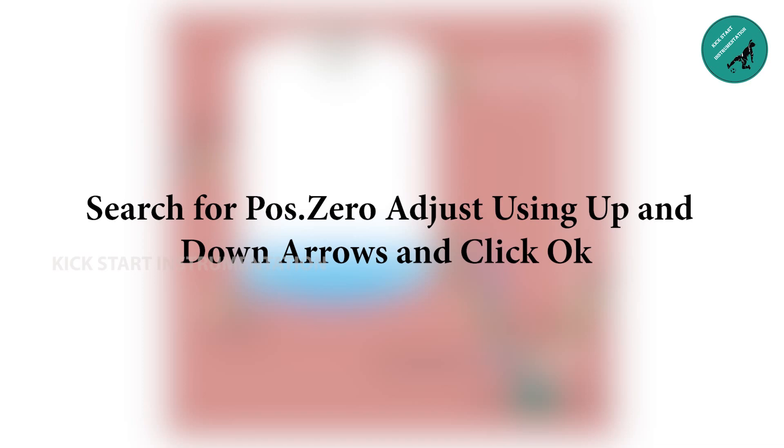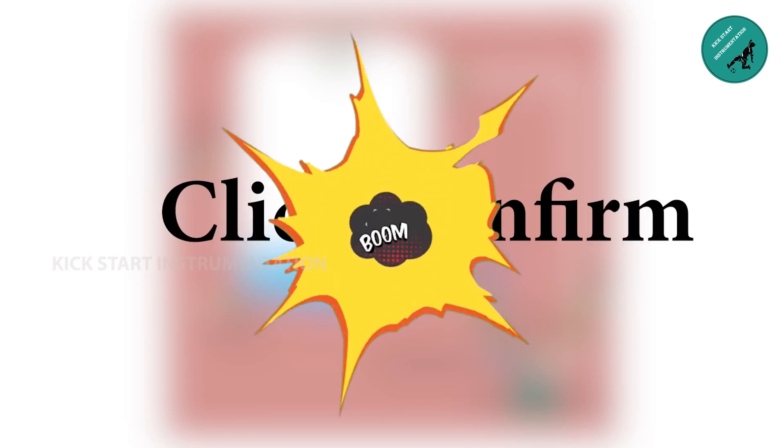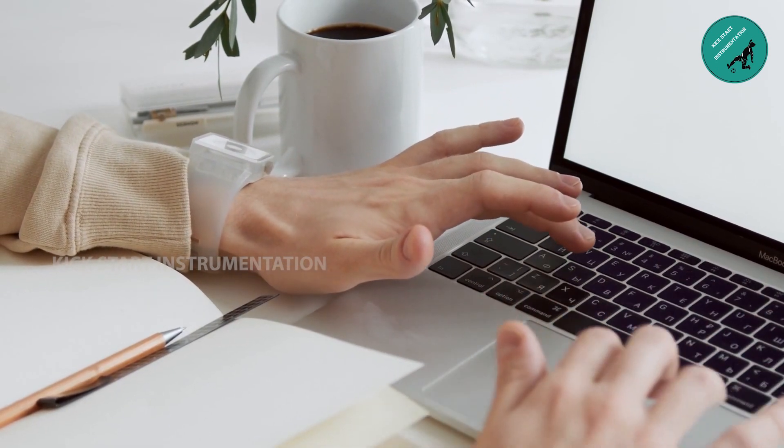Step 4: Correct the measured value from 0.002 bar to 0.0 bar using the up and down arrows. Step 5: Click confirm. Boom! It's all done. We have done position zero adjustment successfully.